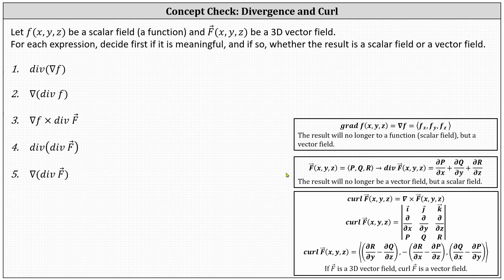Looking at number one, we begin with the gradient of the function f, which results in a vector field, and then we find the divergence of that vector field, which results in a scalar field or function. Number one is meaningful, and the result is a scalar field or function.